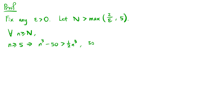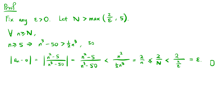Now we can write the proof. We fix any epsilon greater than 0 and let capital N be greater than the maximum of 2 over epsilon and 5. For all n greater than or equal to N, n greater than or equal to 5 implies n cubed minus 50 is greater than one half n cubed. So the absolute value of an minus 0, which is the absolute value of (n squared minus 5) over (n cubed minus 50), equals itself without the absolute sign and is less than n squared over (one half n cubed), which simplifies to 2 over n, which is less than or equal to 2 over capital N, which is less than 2 over (2 over epsilon), which equals epsilon. This completes the proof.